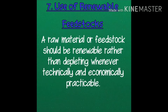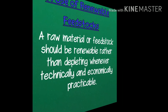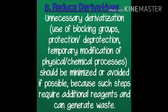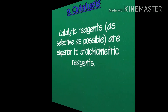Principle 7: raw material feedstock should be renewable rather than depleting whenever technically and economically practical. Principle 8: unnecessary derivatization — use of blocking groups, protection/deprotection, temporary modification of physical/chemical processes — should be minimized or avoided if possible, because such steps require additional reagents and can generate waste.